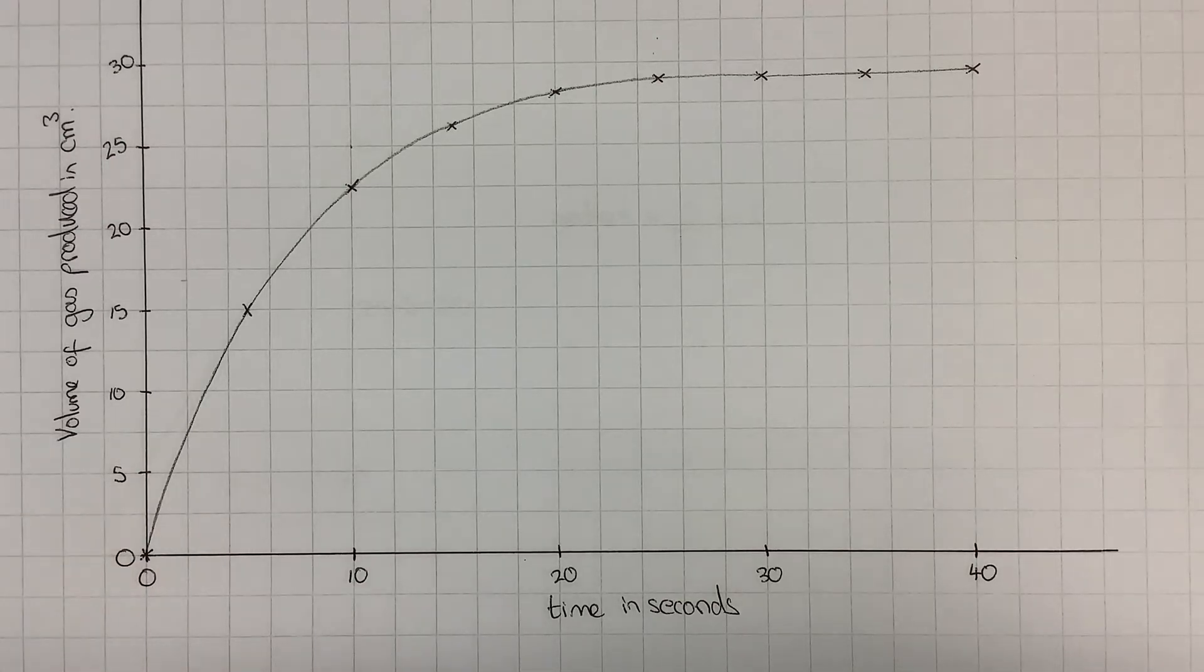To do this, we've got to find the gradient of the graph. You may have used this technique of drawing a tangent to find the gradient for a curved graph when you do speed from a distance-time graph, for example, in physics.